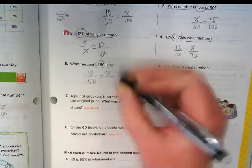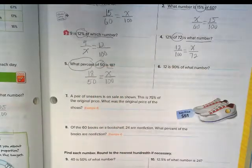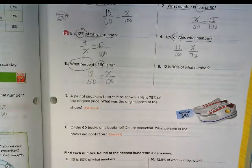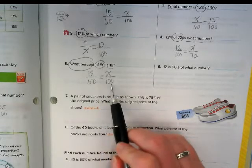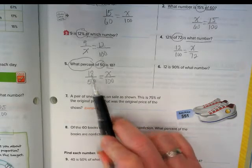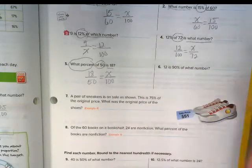Again, the question is going to tell you where our unknown is. I see 15% here of 60. So the 'of 60' tells me it's the whole. What number tells me this is the unknown. And 15% tells me that it's 15 over 100.